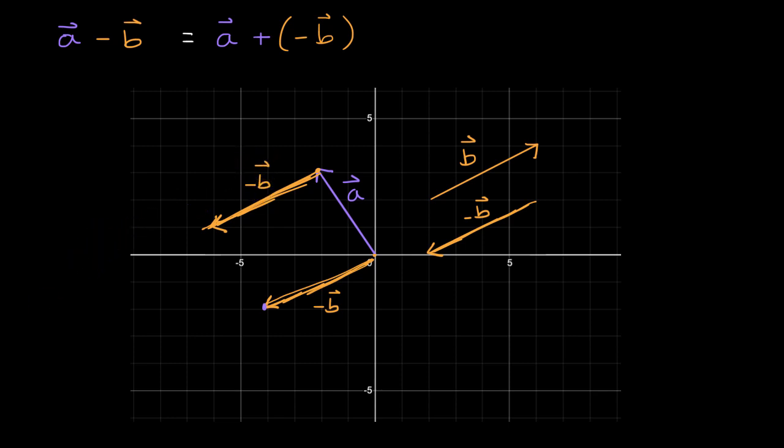And then the sum of vector a and negative b, vector negative b, is going to be going from the tail of vector a to the head of vector negative b.